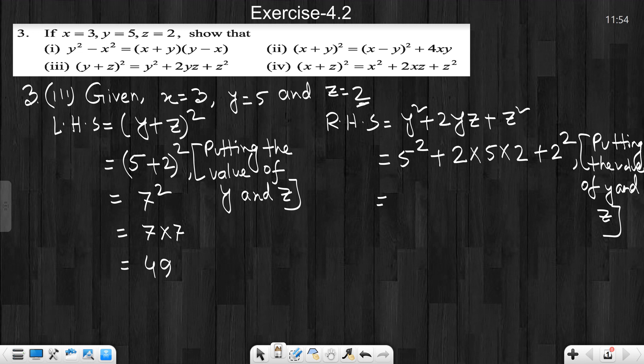So 5 square, 5 square means 5 times 5 is 25. Plus 2 times 5 is 10, 10 times 2 is 20. Plus 2 square, 2 times 2 is 4. We write plus - 4 plus 0 is 4, 4 plus 5 is 9. And here 2 plus 2 is 4. So right hand side is 49. Left hand side is 49. Left hand side and right hand side are equal. Therefore, left hand side equals right hand side.